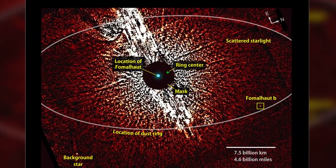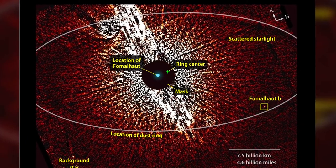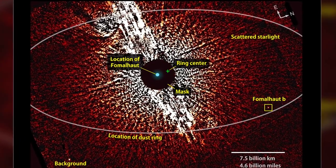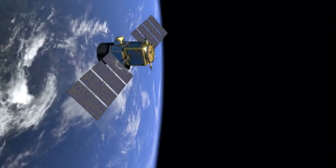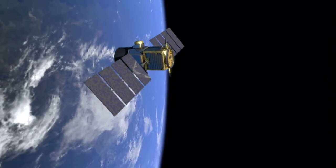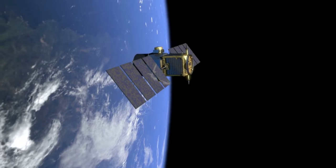Fomalhaut B has since been reclassified as a likely dust cloud, but Hubble has snapped photos of several other alien worlds since then. The latest announcement from NASA states that the telescope has made yet another mind-boggling discovery.